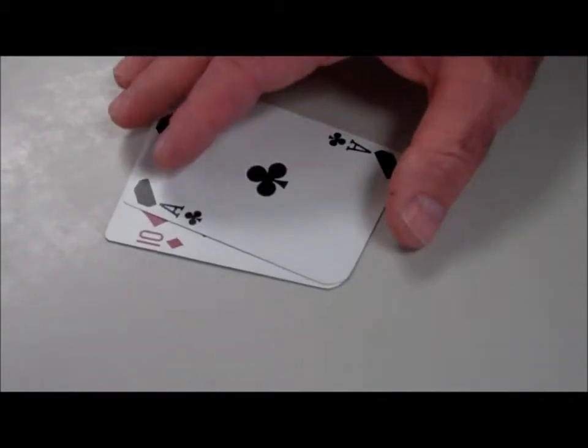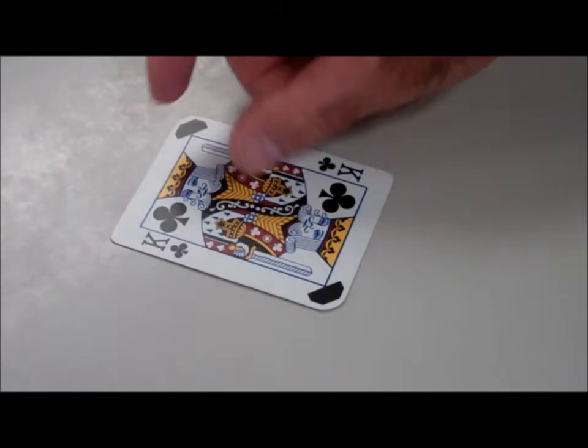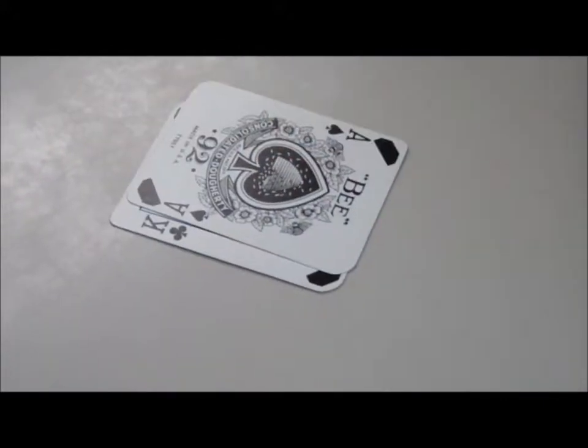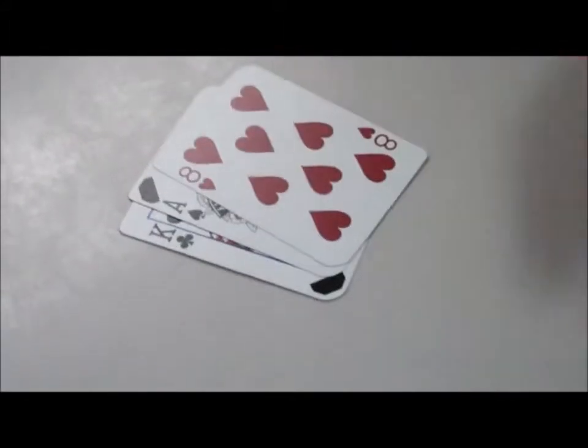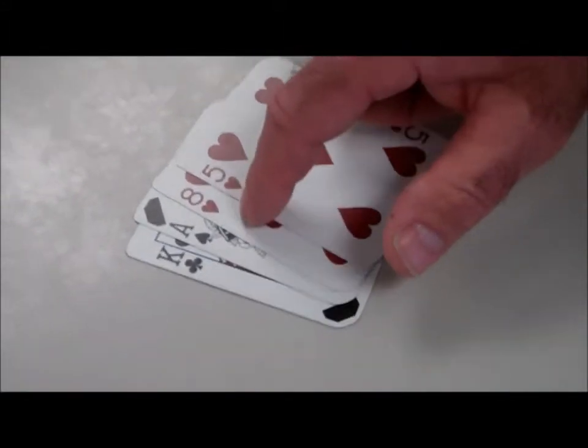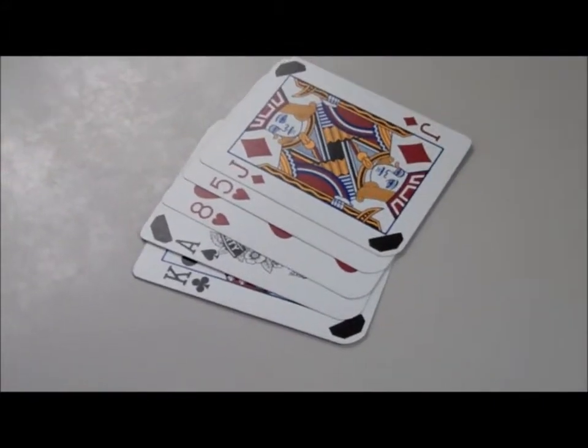Aces are ones, face cards are 10, so there's an 11, there's a 20. 10, 11, looking for a 9, so I have 19. There's a 13, 14, 15, 23.